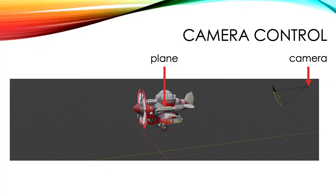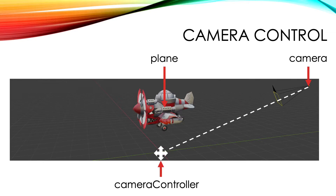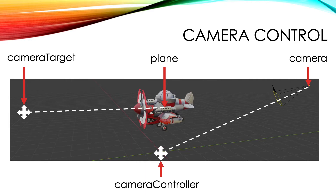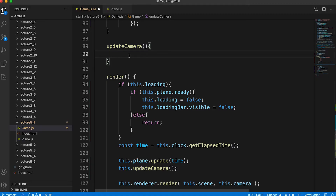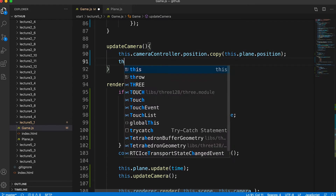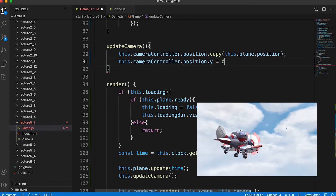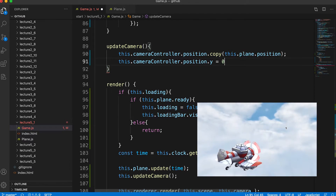The updateCamera method has two things controlling the camera: positioning and direction. A controller object, which is an Object3D, the camera is parented to it. Moving the controller will move the camera, but it will retain the offset position we created it with. In code, we move the camera controller to the plane's position but set its y value to zero — so the plane may be above or below this Object3D. We also have a target position, what the camera is looking at, and this will always be six units ahead of the plane.